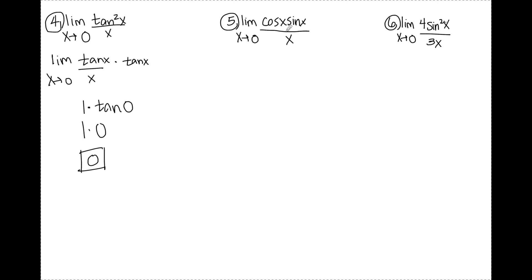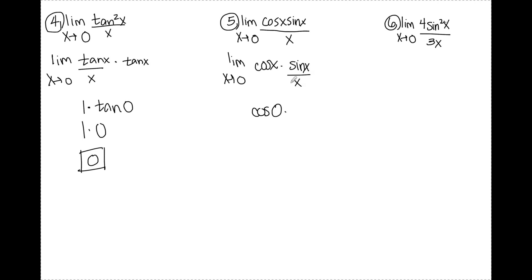Number five uses the same idea as four — I'm going to split this up into one of the known forms. I won't choose cosine x over x because that's DNE. So I split this as the limit as x approaches 0 of cosine x times sine x over x. For cosine x, I plug in 0 to get cosine of 0. For sine x over x, that's a over b with a and b both equal to 1, so that limit is 1. Cosine of 0 is 1, and 1 times 1 is 1. That's my answer for number five.